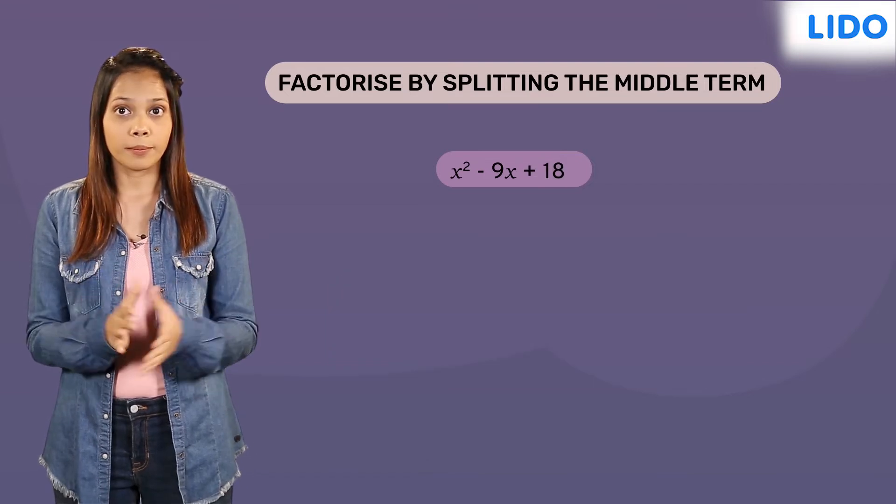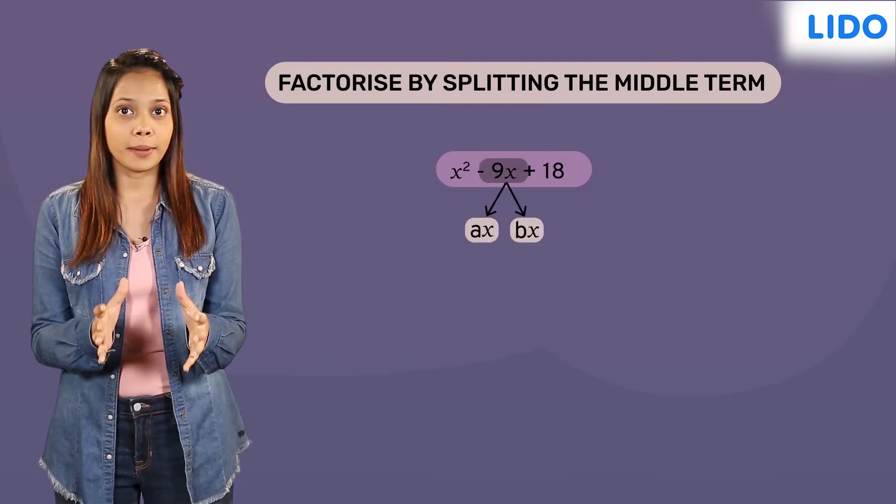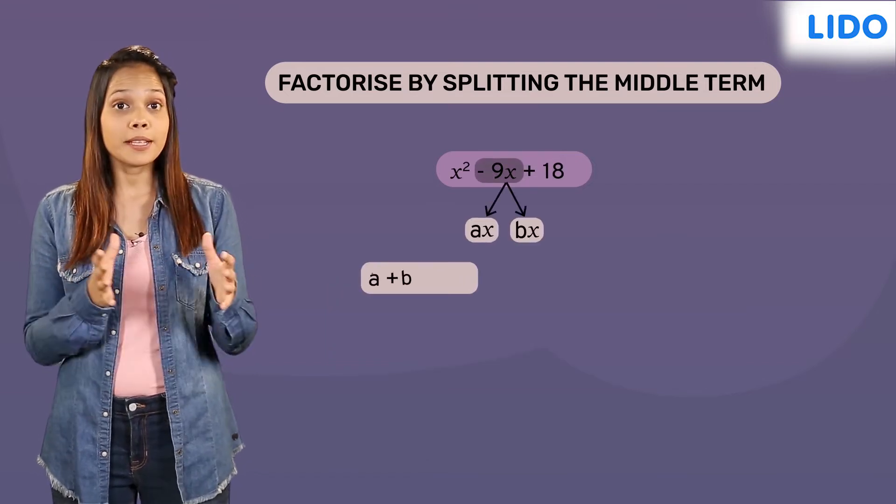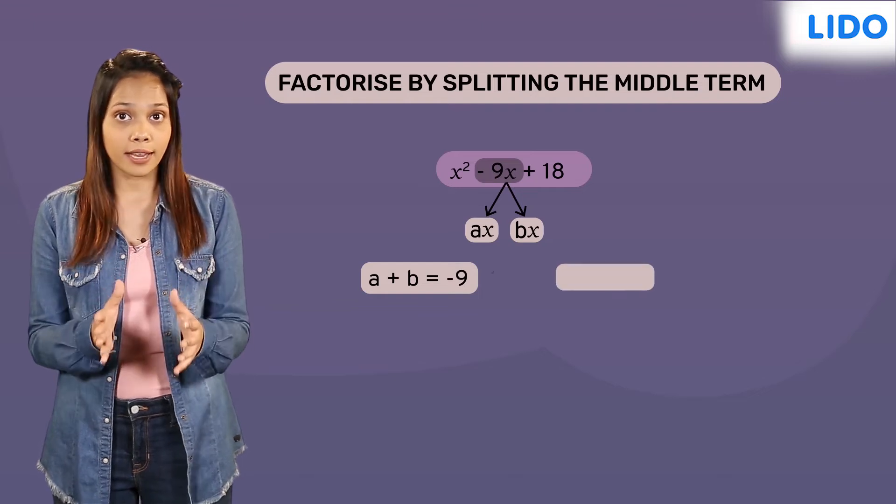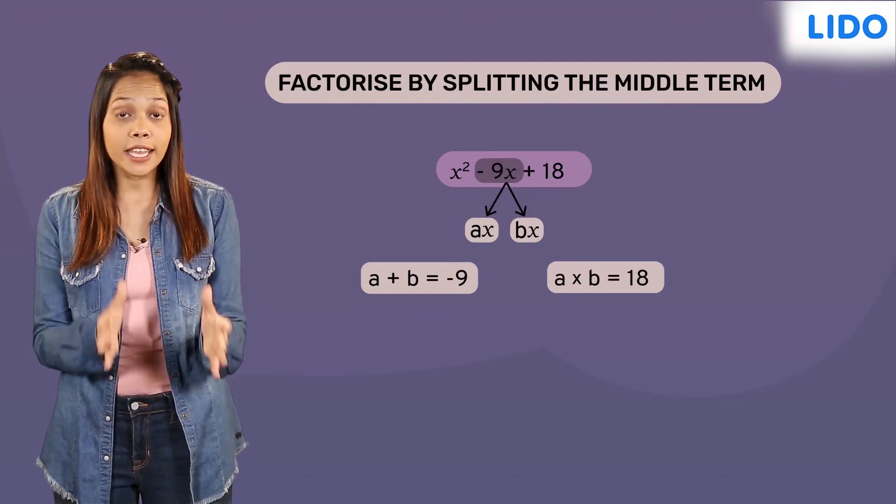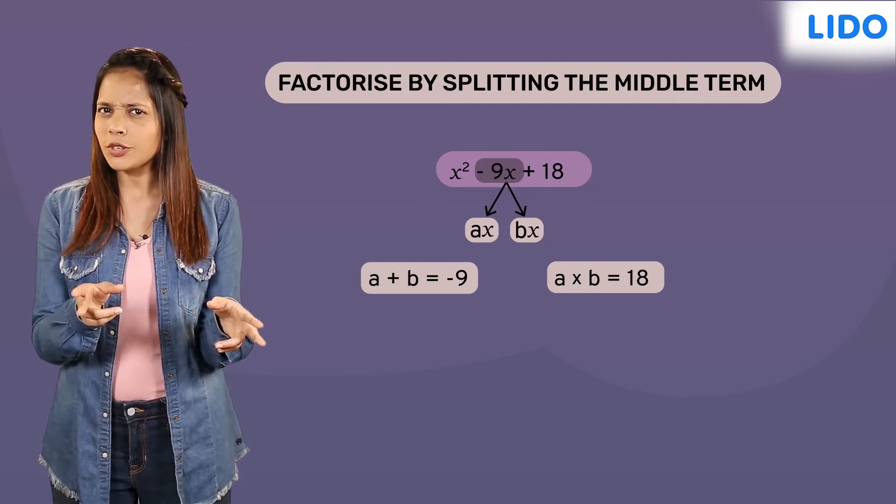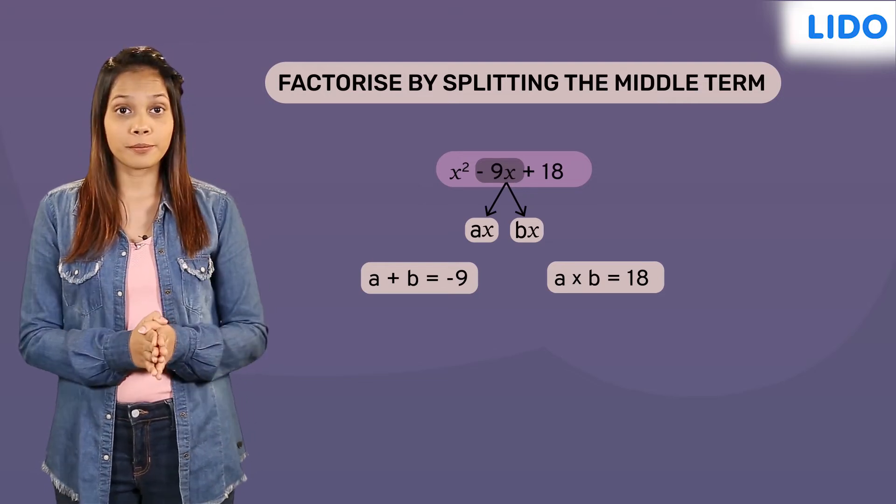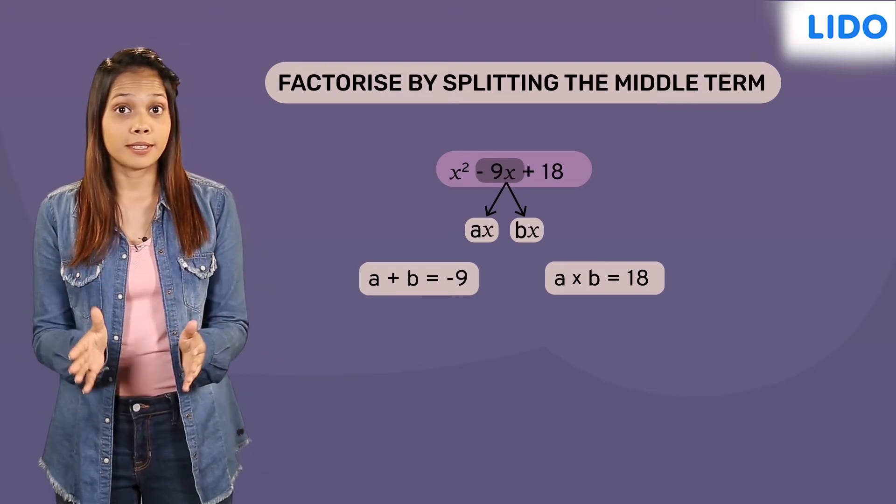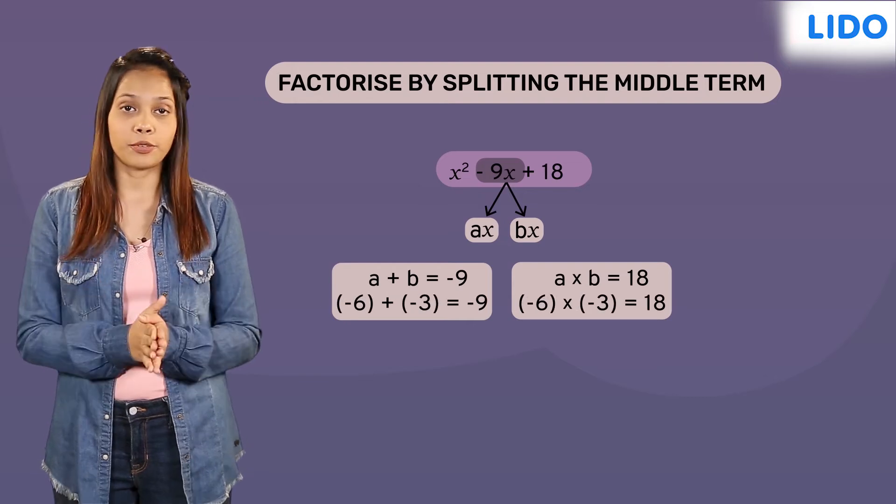For the given expression, we have to find a and b such that a plus b equals negative 9 and a times b is equal to 18. What do you think? Which two numbers can satisfy both the conditions? The two numbers are negative 6 and negative 3.